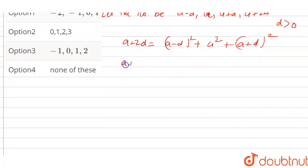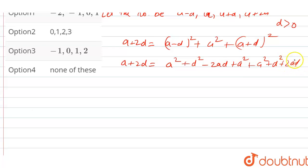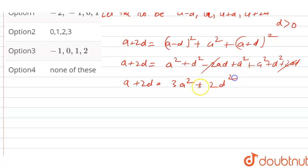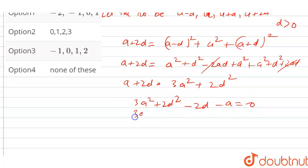Expanding: a plus 2d equals (a squared plus d squared minus 2ad) plus a squared plus (a squared plus d squared plus 2ad). The 2ad terms cancel, giving us: a plus 2d equals 3a squared plus 2d squared.